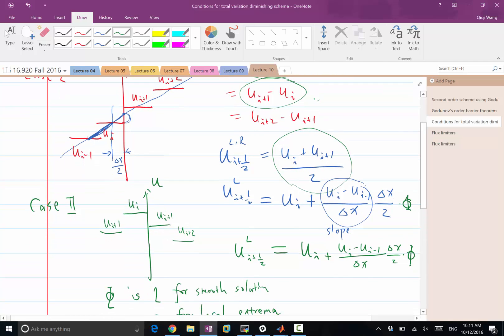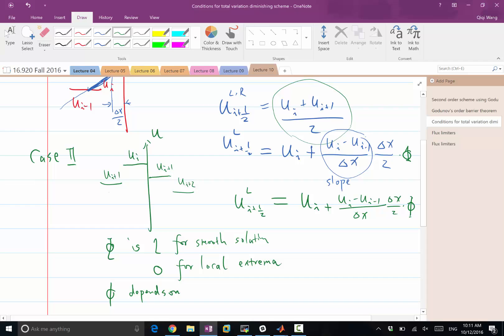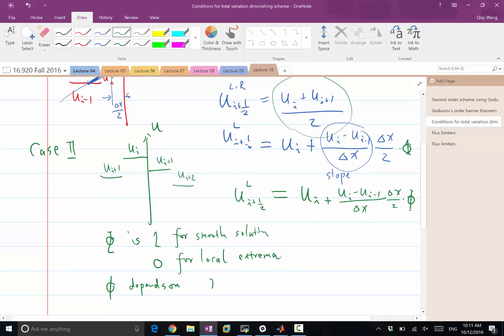In the other case, the ratio is what? It's negative, right? So again, depends on the ratio, let me call R being ui plus 1 minus ui divided by ui minus ui minus 1.